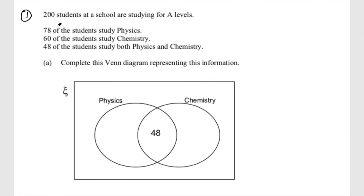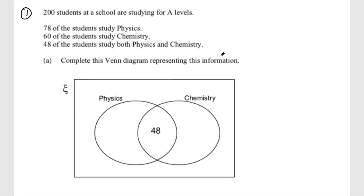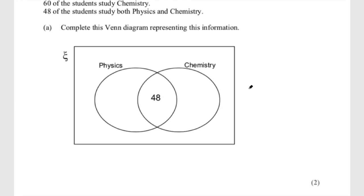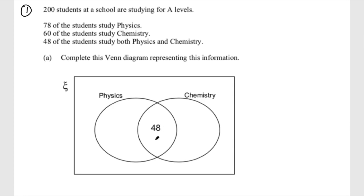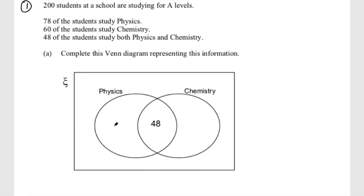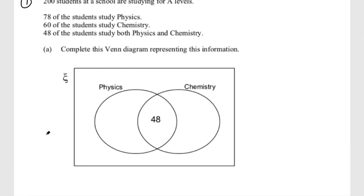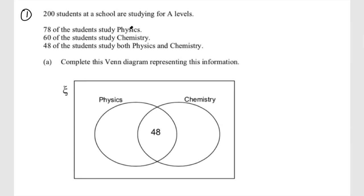Question one: 200 students at a school are studying for A levels. 78 of the students study physics, 60 study chemistry, and 48 study both physics and chemistry. Complete the Venn diagram. They've filled in one section already. We need to find the number studying physics only, chemistry only, and neither. They tell us 78 students study physics — if 48 also study chemistry, that leaves 30 who only study physics. So I've done 78 minus 48 to give me 30.